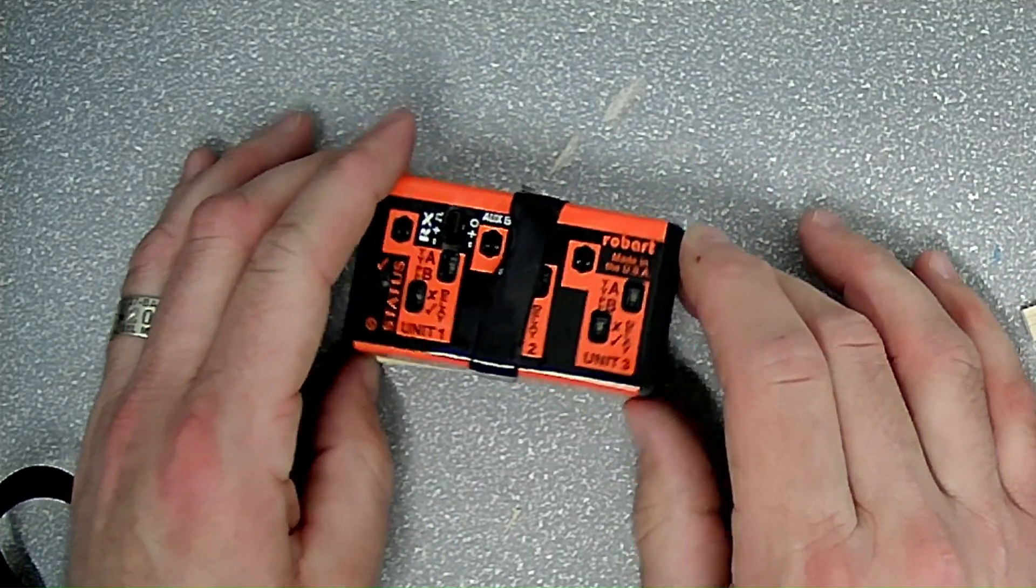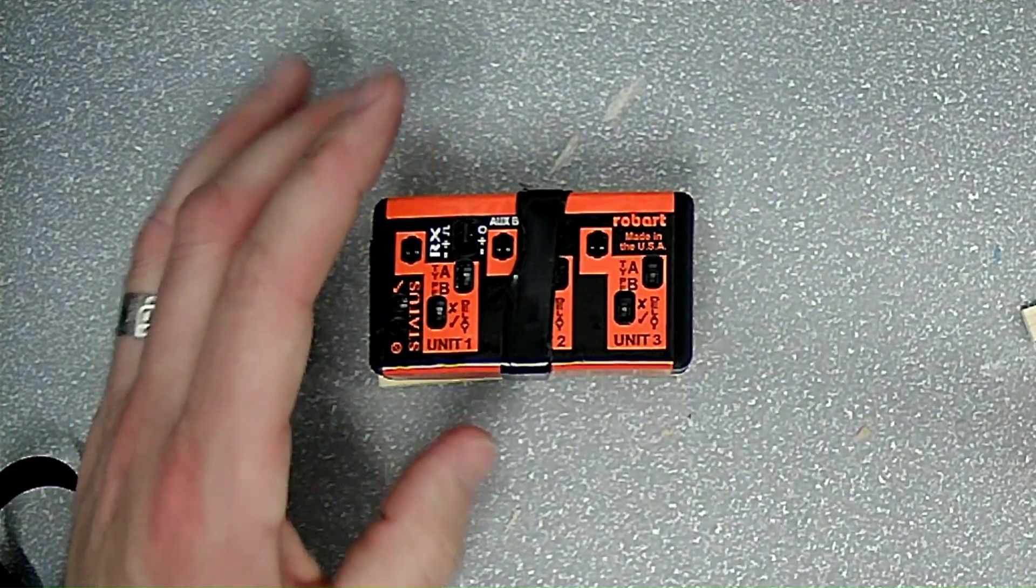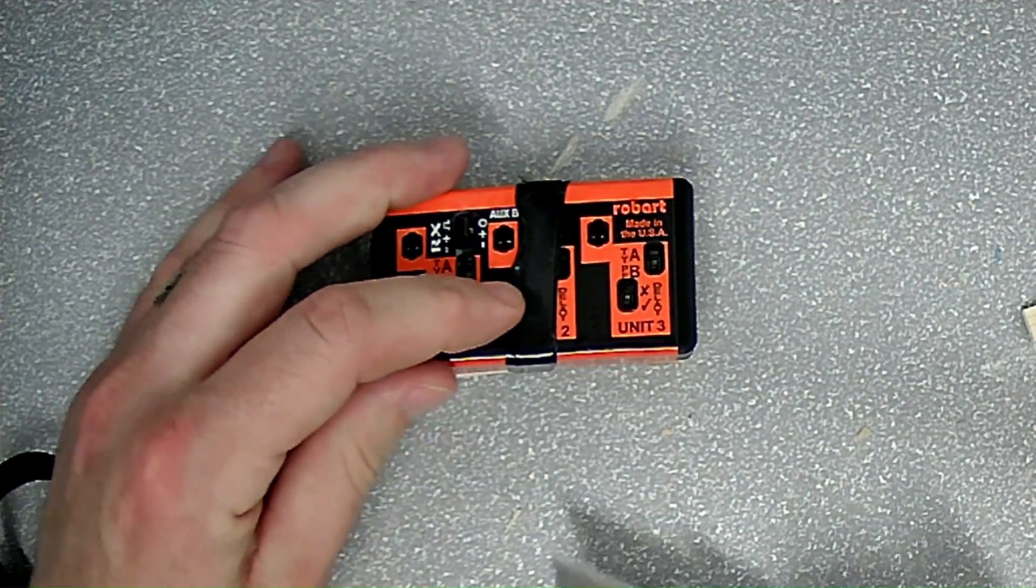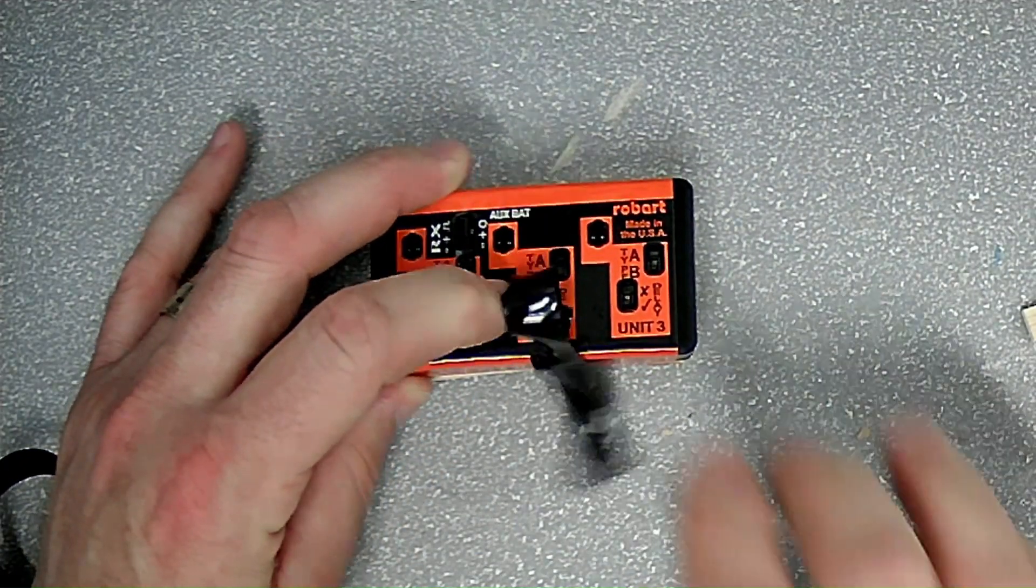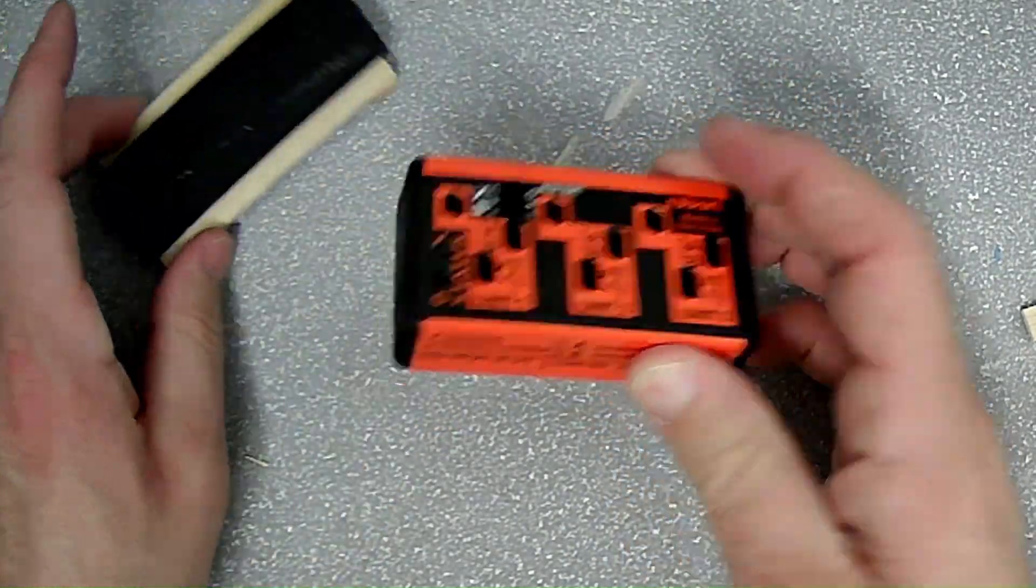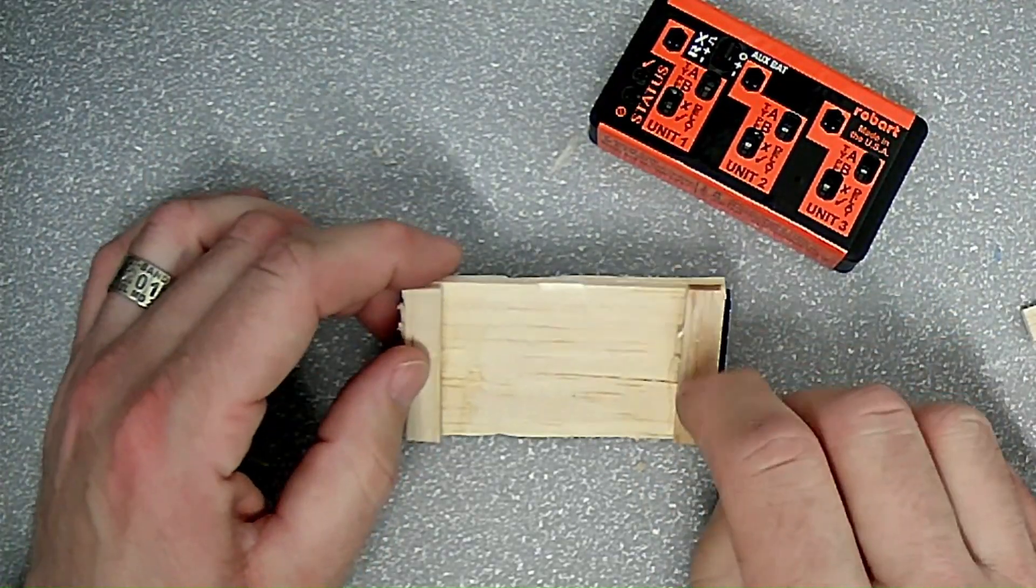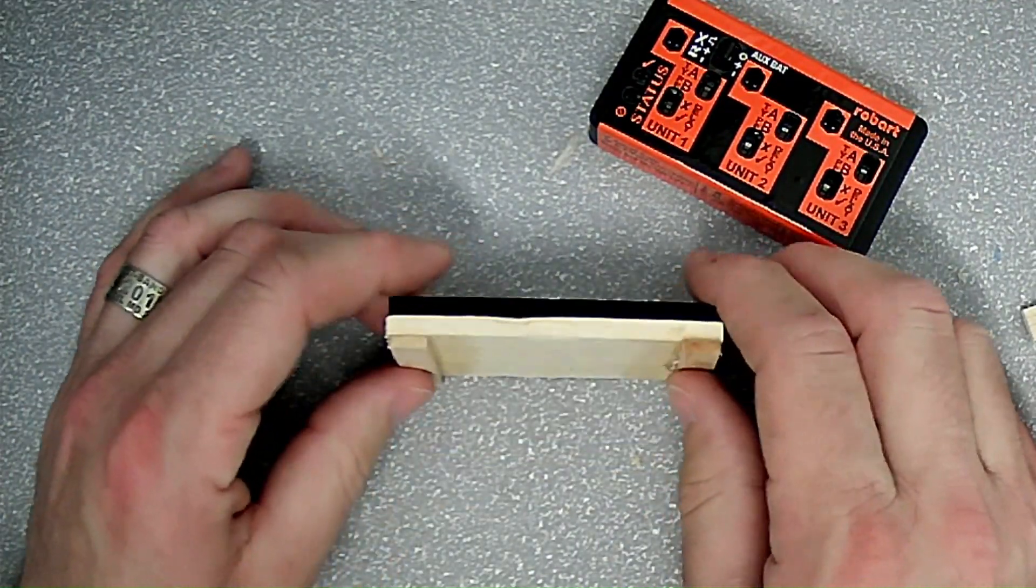If you ever need to remove the box, you can easily just cut the silicone tape. You've got your box to be able to remove. And you can glue this riser into the plane.